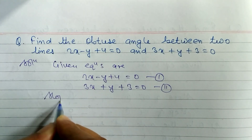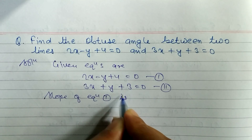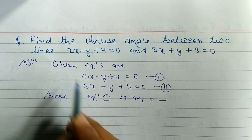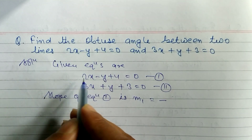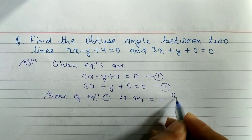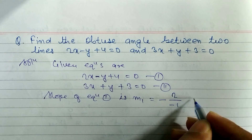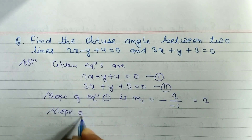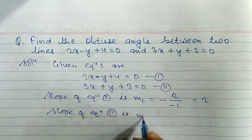The slope of equation 1 is m1. The slope formula is: minus coefficient of x divided by coefficient of y. The coefficient of x is 2, and the coefficient of y is minus 1 (taking sign). So m1 equals minus 2 divided by minus 1, which gives us 2.